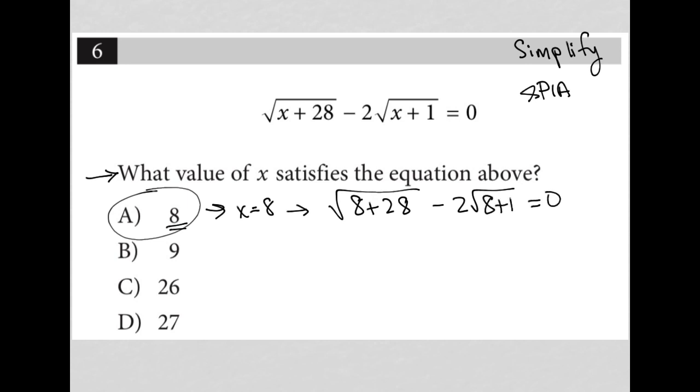8 plus 28 is equal to 36. So this becomes radical 36 minus 2. 8 plus 1 is 9. Square root of 36 is 6, technically plus or minus 6. On this test, we should know, whenever the question itself provides the radical, the SAT only wants the positive of the square root.